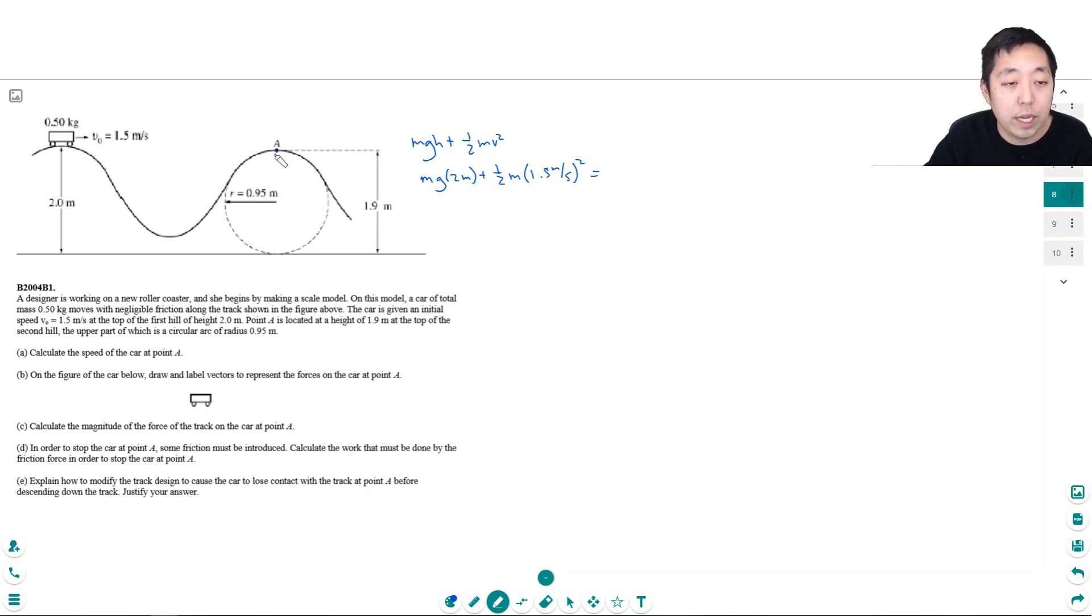Now at point A it has to also have some mgh, some potential energy, some kinetic energy. Its potential energy is mg times 1.9 meters because it's at a slightly lower point than up here, plus one half m times v squared.